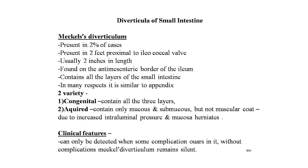This heterotopic epithelium usually lies in the proximal end of the diverticulum and not infrequently it also extends for a short distance into the nearby ileum. There are two varieties: congenital and acquired. Congenital contains all three layers; acquired contains only mucosa and submucosa but not a muscular coat, due to increased intraluminal pressure causing mucosal herniation. Without complications, Meckel's diverticulum remains silent.